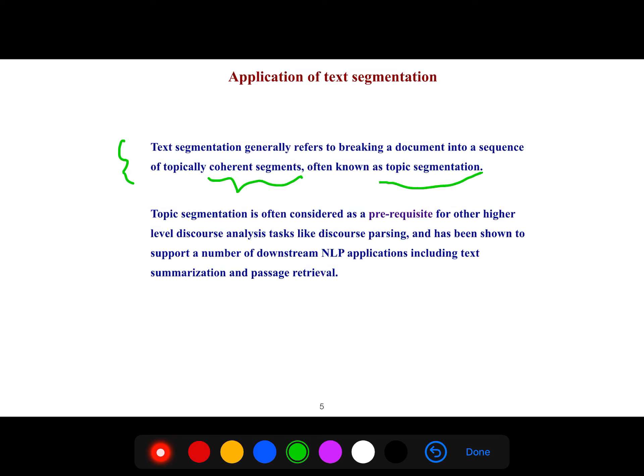Topic segmentation is often a prerequisite. It means that first, it is better to do topic segmentation. After doing that, you go to other levels, such as discourse parsing. After that, you do other things.